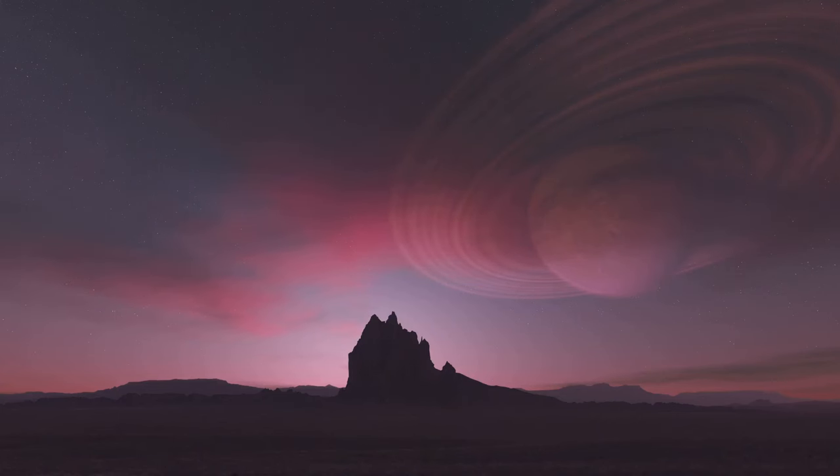This means that the sky on Gliese 581c would be a dramatic crimson color, a far cry from the familiar blue we see on Earth. Imagine sunsets that paint the sky in shades of scarlet and deep maroon. It would certainly make for some breathtaking views.